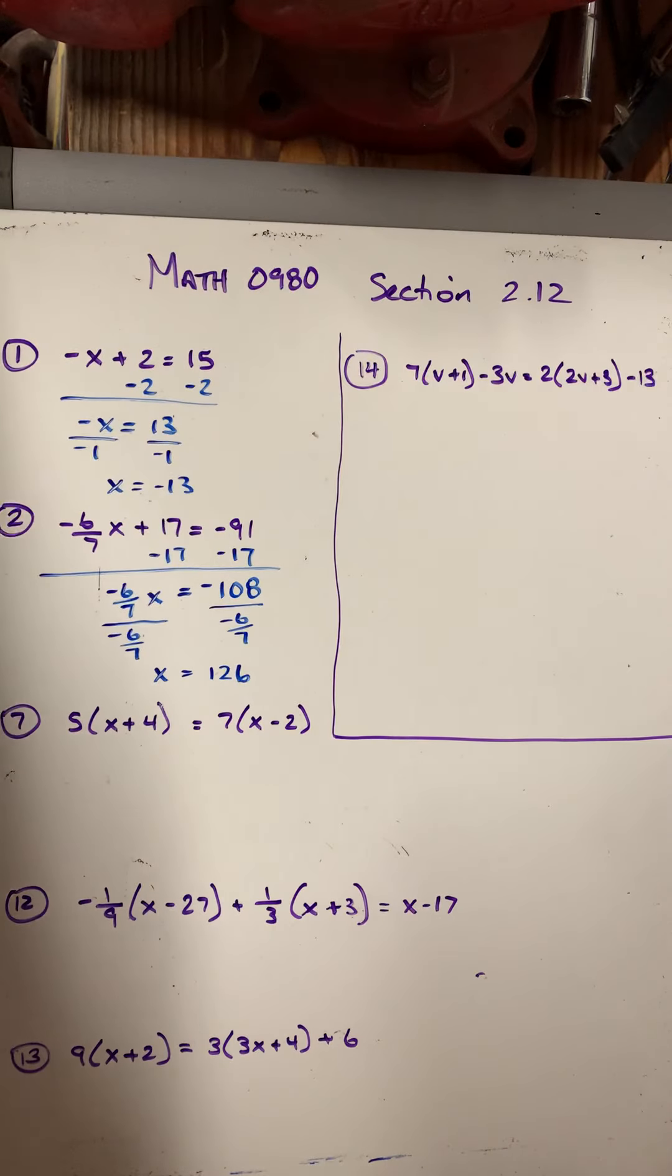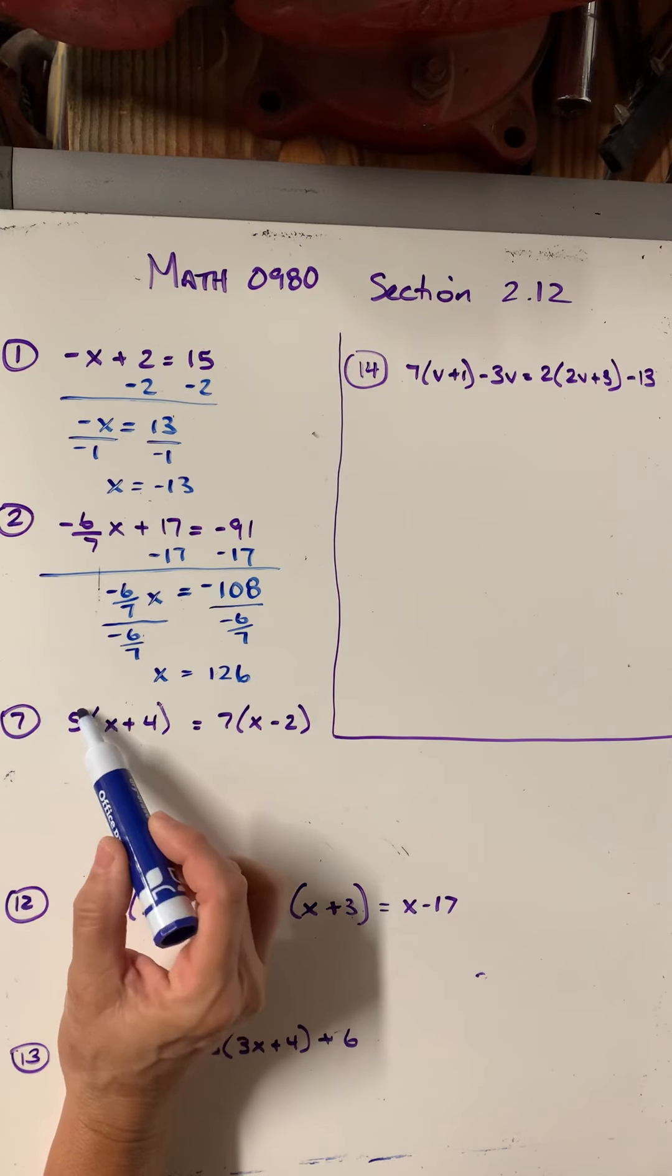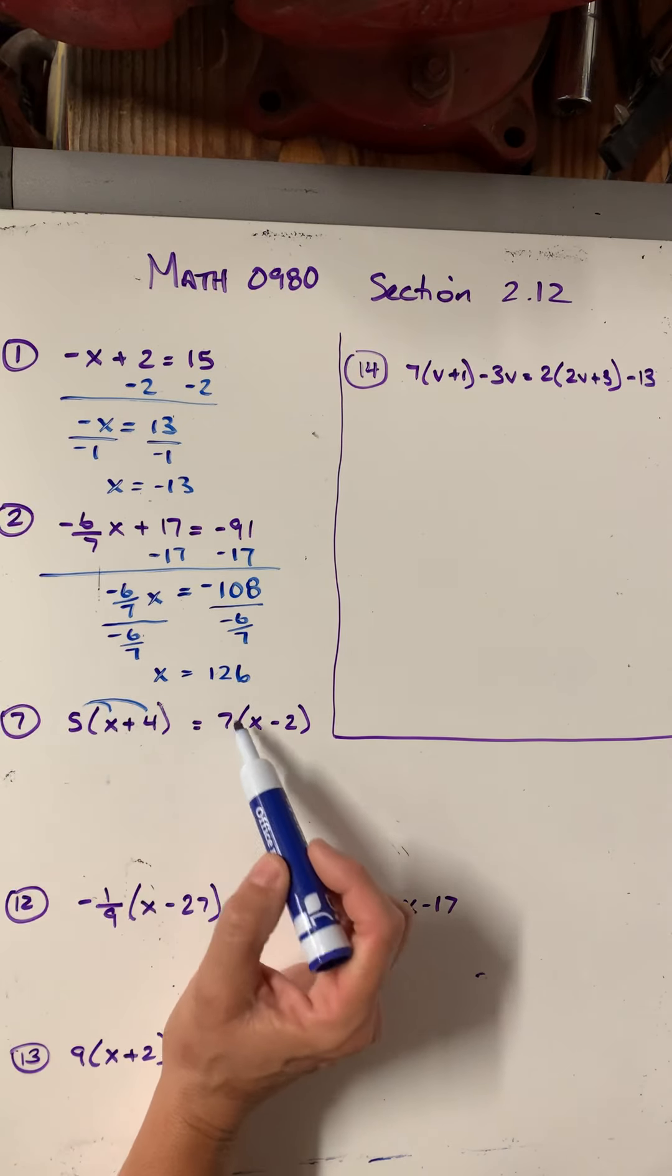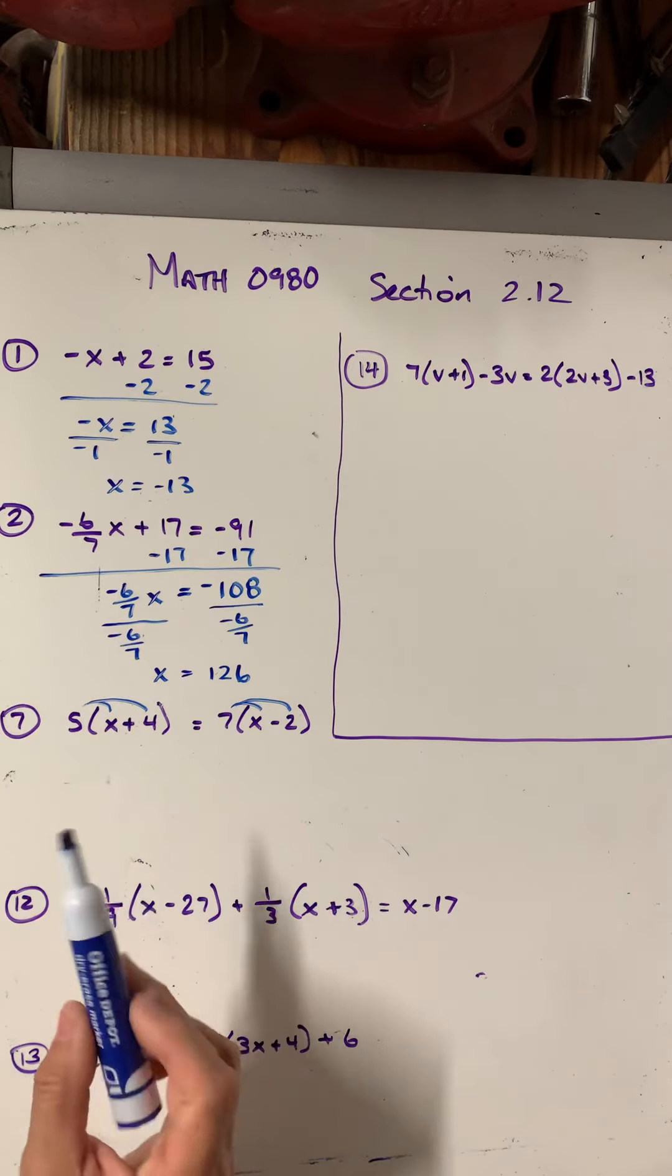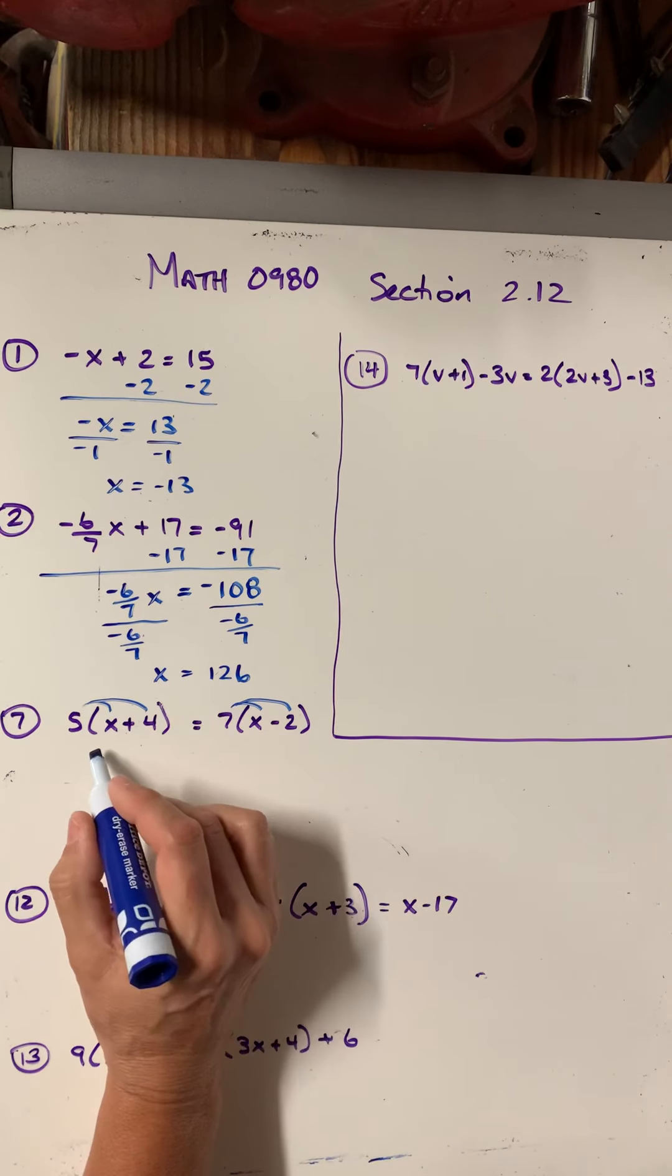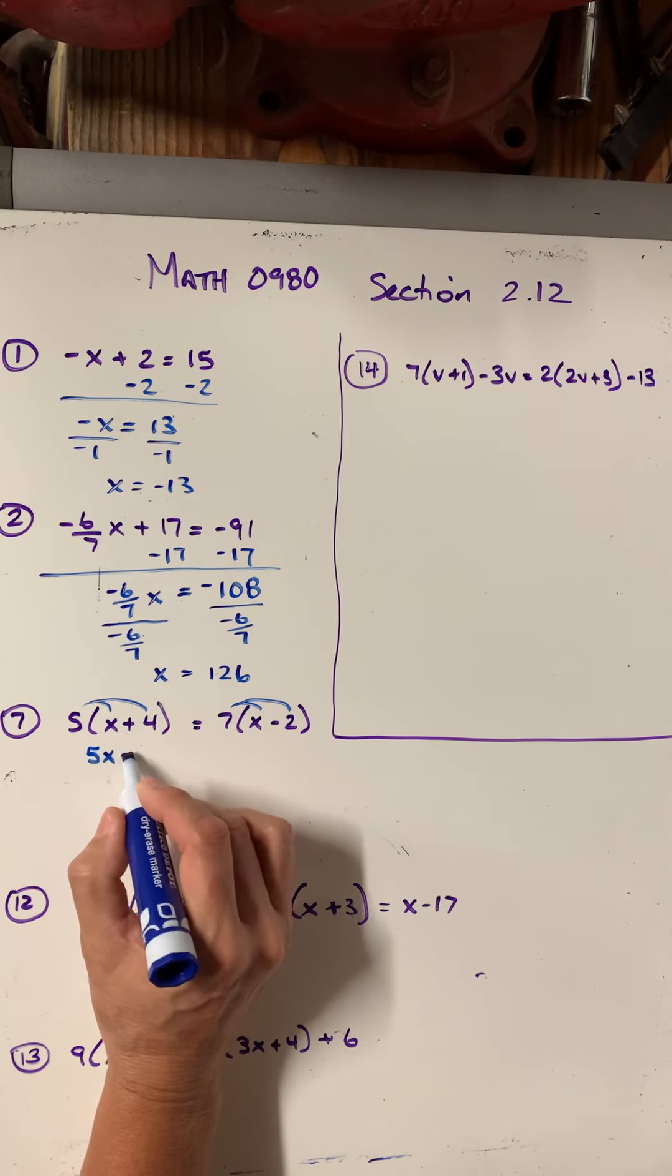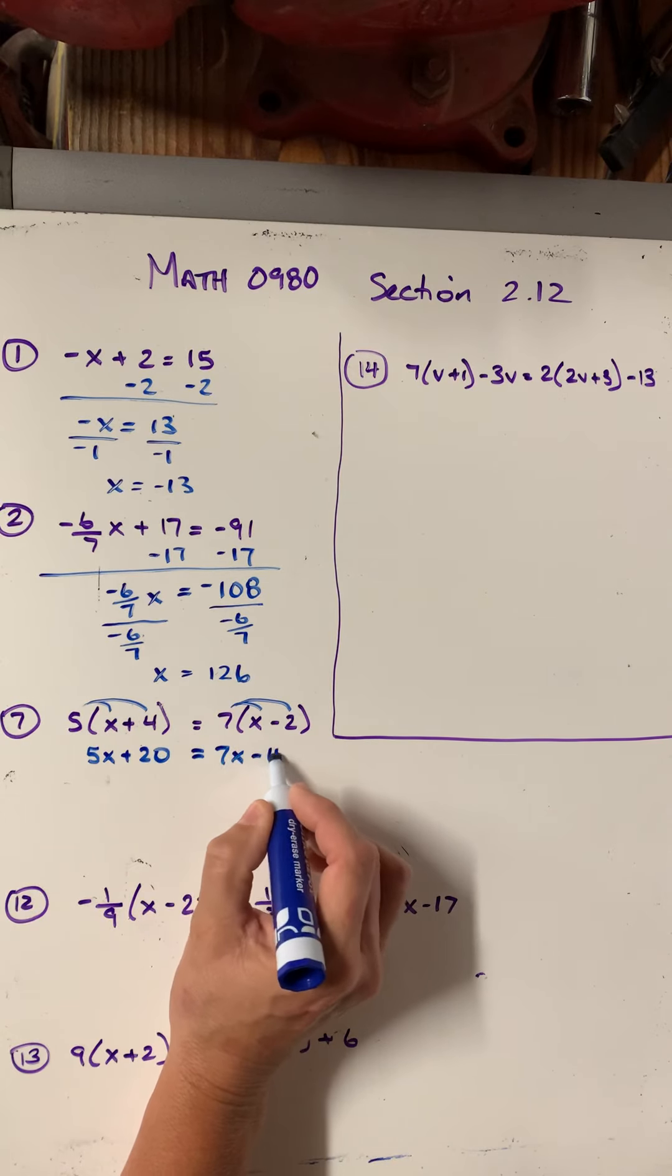Question 7 requires even a few more steps. So the first thing I would do is distribute the 5 on that side and distribute the 7 on this side. So I'm going to simplify both sides before I start moving things across the equal sign. So I get 5x plus 20 equals 7x minus 14.